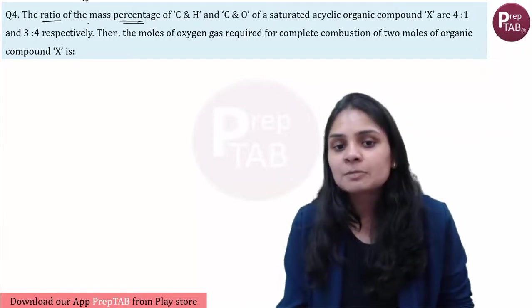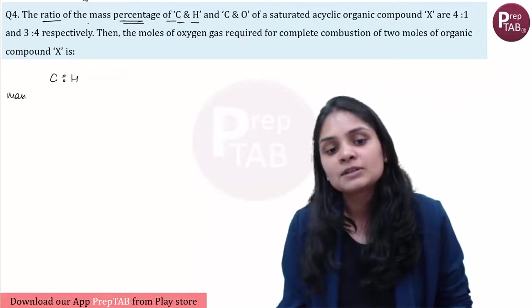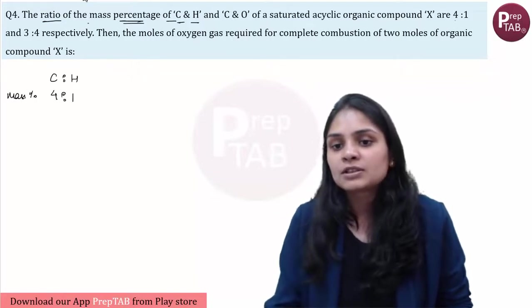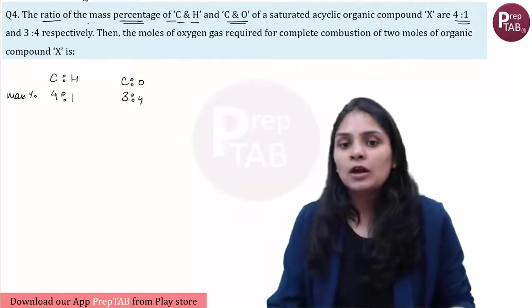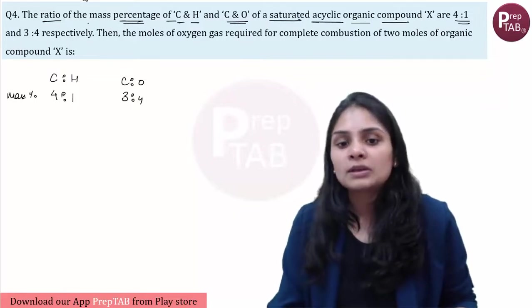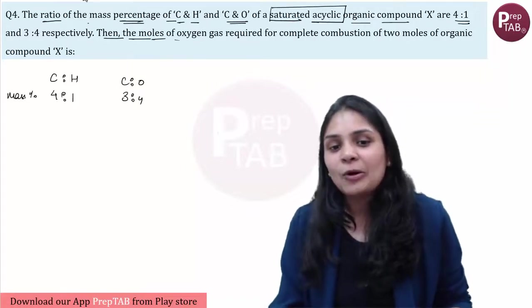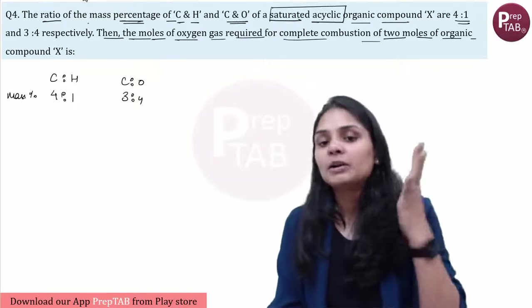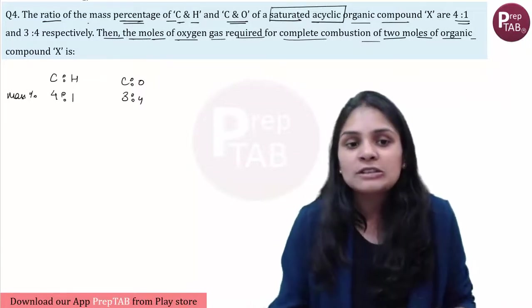Last question, again a numerical question from POC. The ratio of mass percentage of carbon and hydrogen is given to you as 4 is to 1, it's given over here. And carbon oxygen, this is 3 is to 4, this is given. Of a saturated acyclic organic compound, this will be useful. Then the moles of oxygen gas required for combustion of 2 moles of organic compound X. So first I have to find X's formula. So here concept used is your empirical formula, molecular formula.